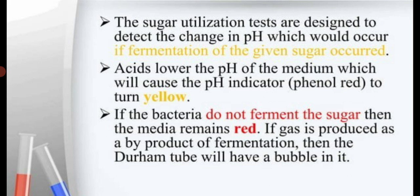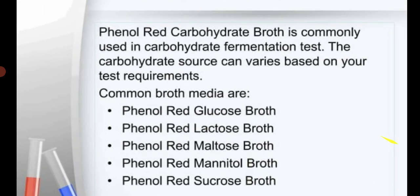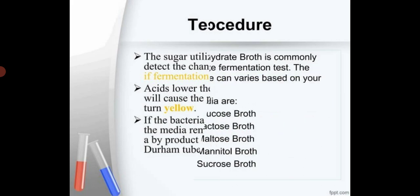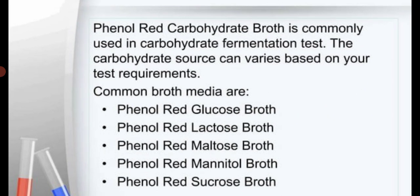Normally, an Andrade indicator is used in sugar fermentation medium. The formation of pink color indicates acid production. If the bacteria do not ferment the sugar, the medium remains red (for phenol red) or colorless (for Andrade indicator). If gas is produced as a byproduct of fermentation, it will be collected in the Durham tube as a bubble. Phenol red carbohydrate broth is commonly used in the carbohydrate fermentation test. Either phenol red carbohydrate broth or Andrade indicator carbohydrate broth can be used.